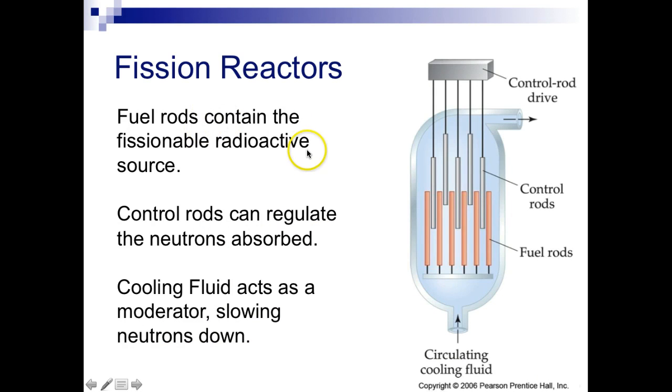The fuel rods contain the fissionable radioactive source. The control rods will regulate the neutrons that are absorbed, preventing the chain reaction from happening. When these fuel rods undergo fission and the nuclei split, extra neutrons are released. The control rods will absorb those neutrons and prevent chain reactions from happening, which is what produces large amounts of energy. The cooling fluid acts as a moderator and will slow these neutrons down. A lot of the time, it'll be colder water or something like that that will slow those neutrons down so they don't move fast and hit into other stuff at high speeds, which would cause other nuclei to split.